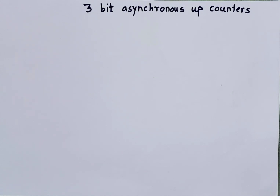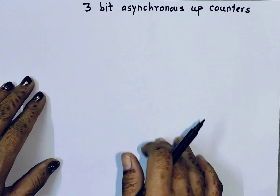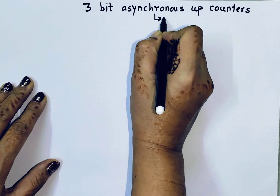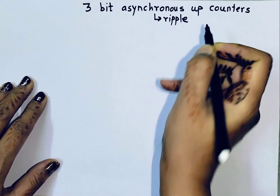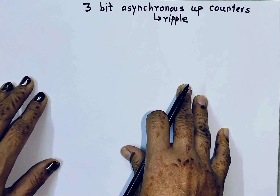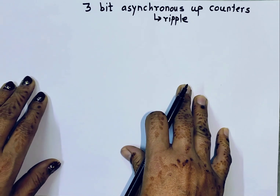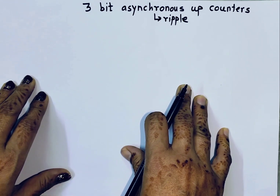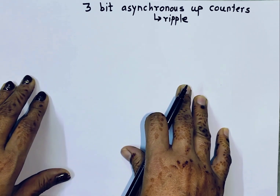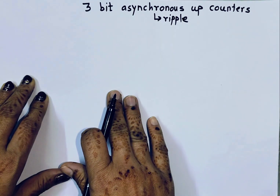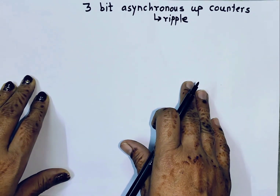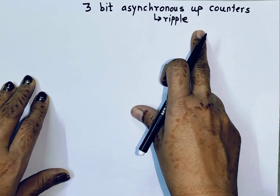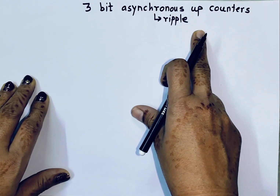Asynchronous counters are also called ripple counters. Here, asynchronous means the external clock is connected to only one flip-flop, and the output of the first flip-flop acts as the clock input to the second flip-flop. An up counter counts in the upward direction.